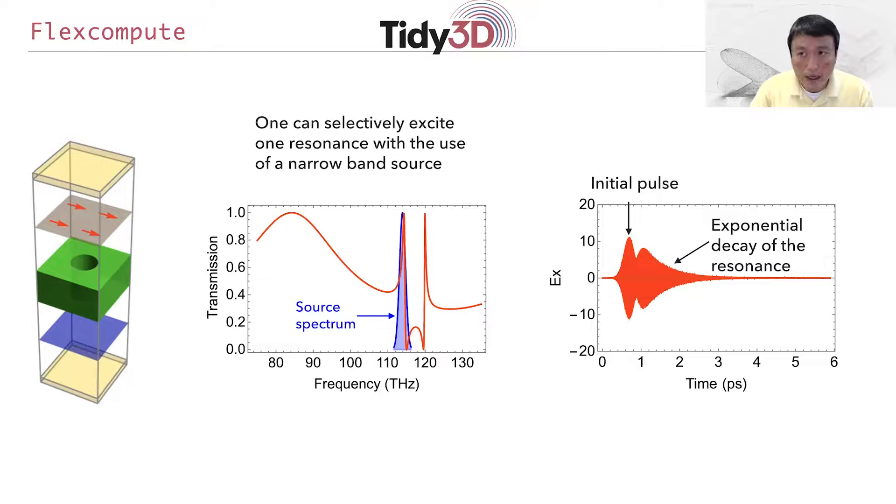We choose a source spectrum indicated by the blue curve here. Again, on the right, I'm plotting the Ex field at the monitor point as a function of time. Again, you see an initial pulse, now actually much longer than the previous example and therefore generating a narrow band spectrum, as well as the exponential decay of the resonance. In this case, you see a pure exponential decay without a beating pattern that we've seen in the previous example. This comes about because now we selectively excite only one resonance.